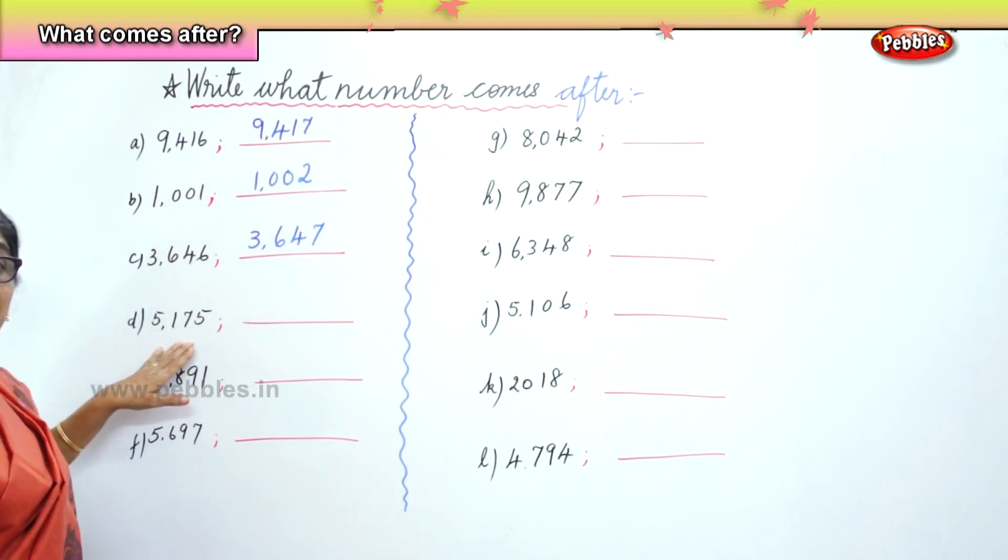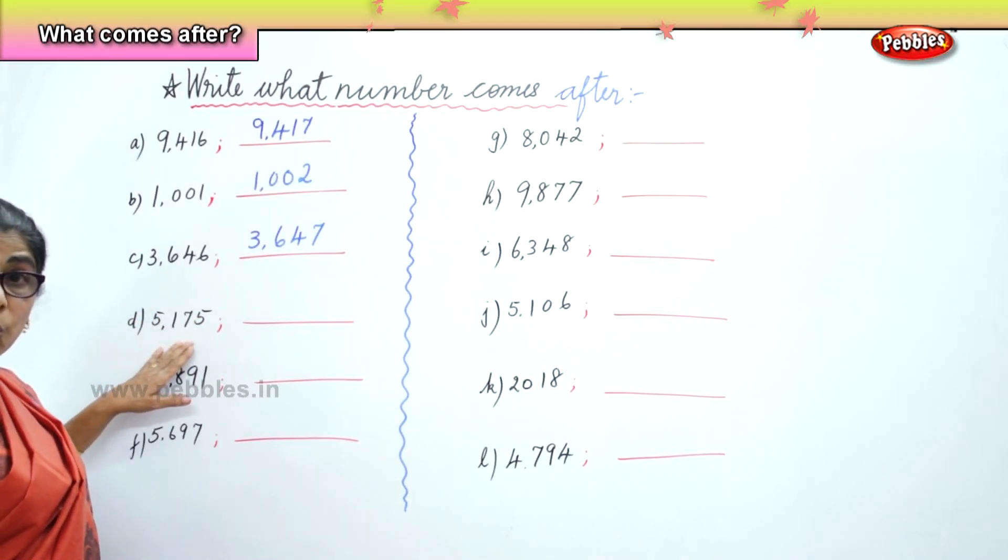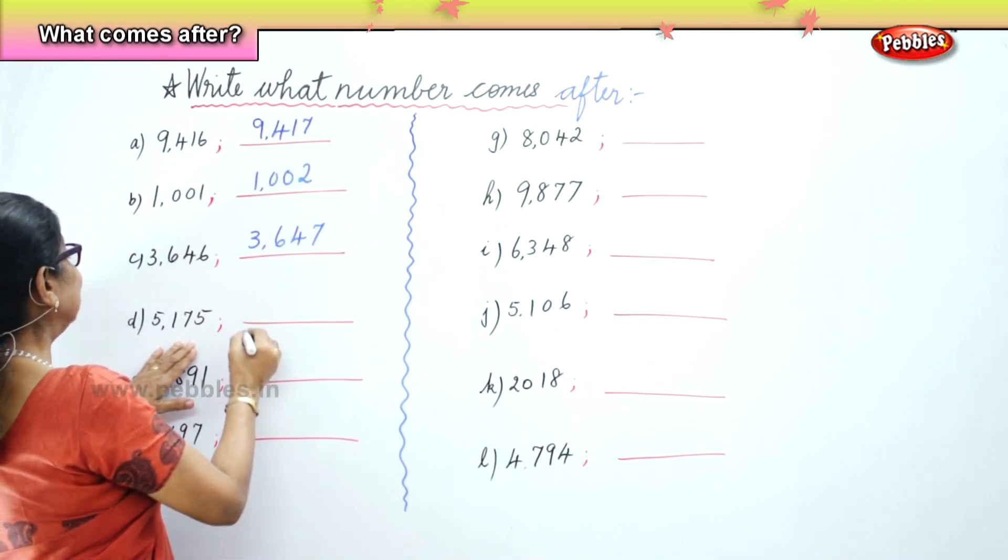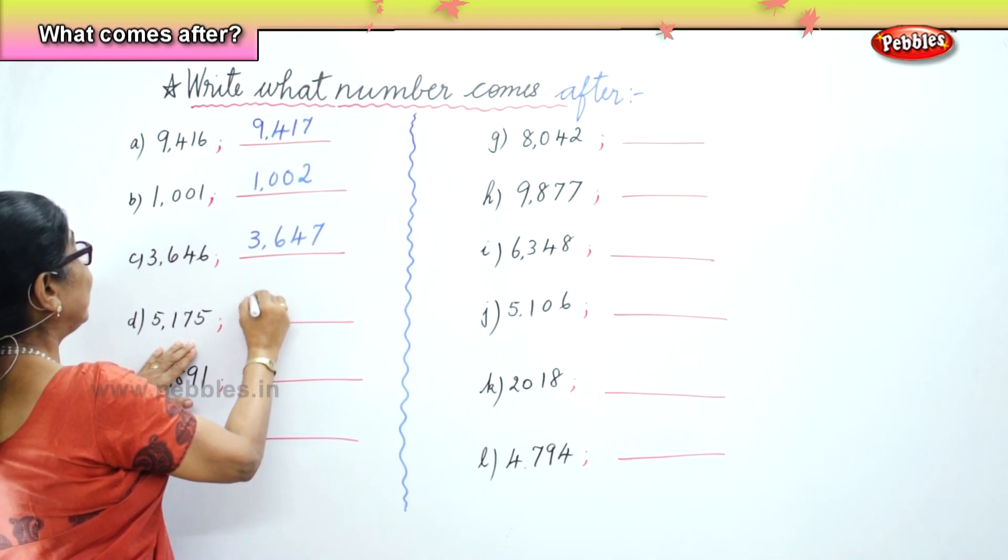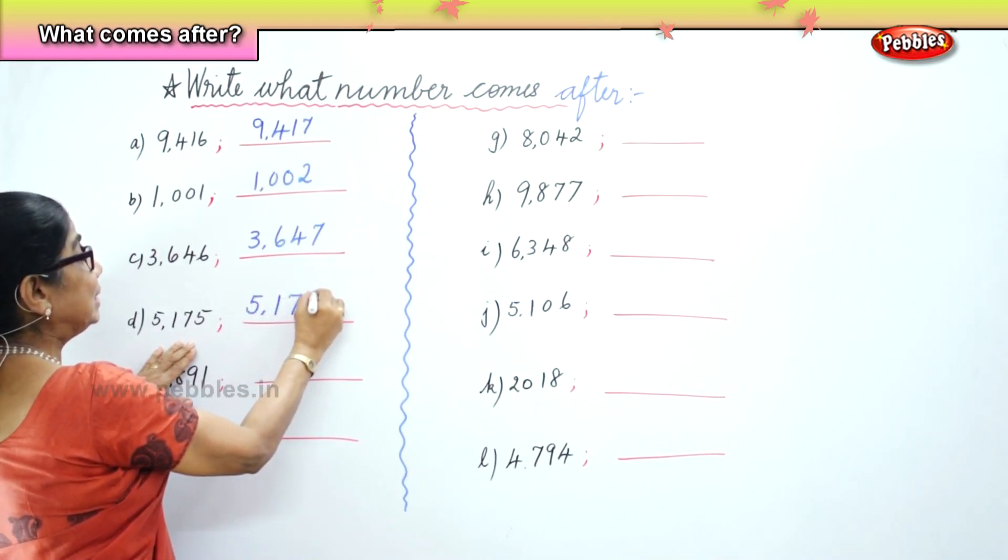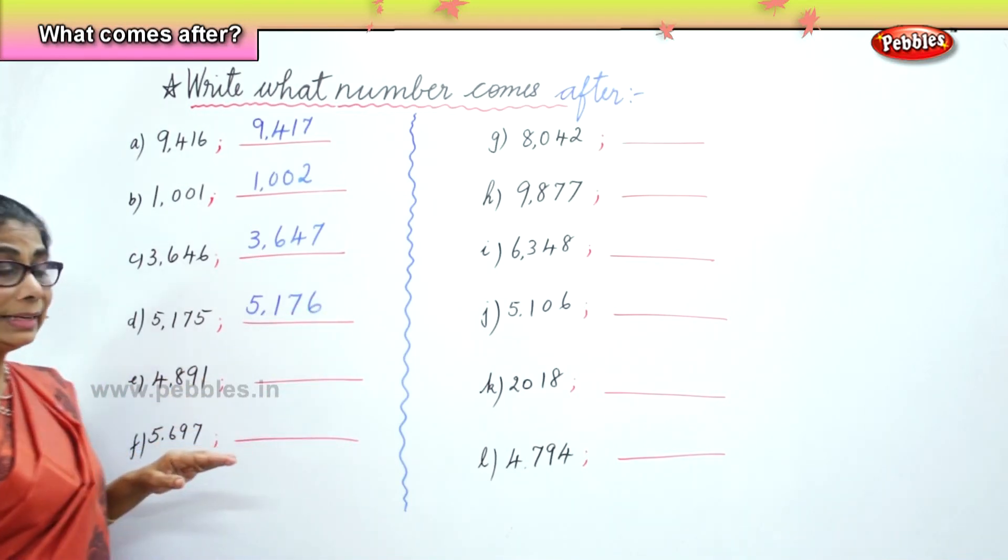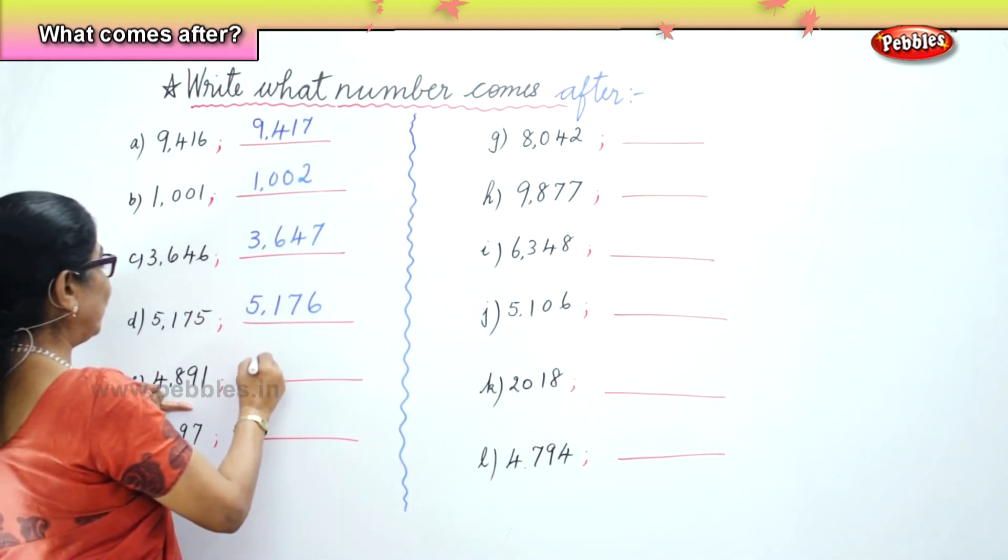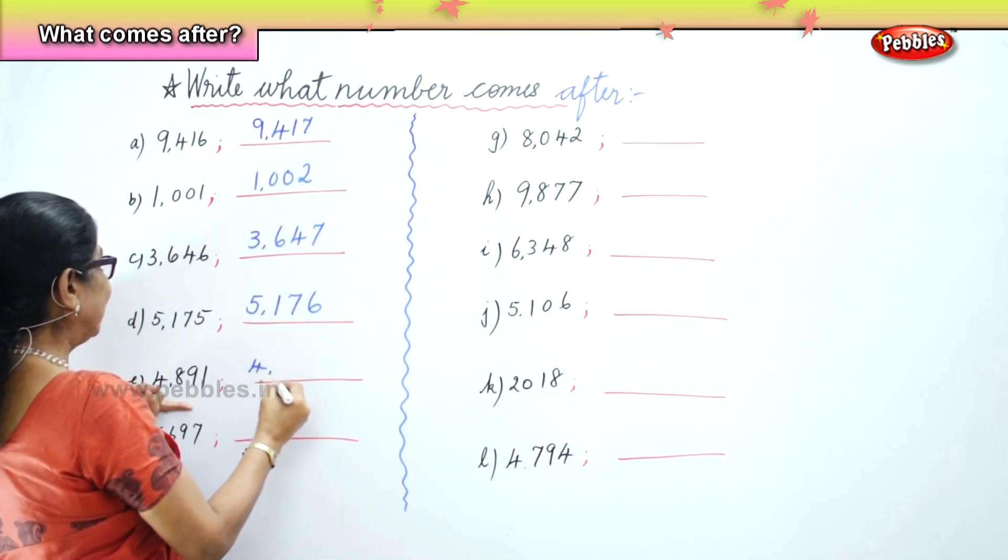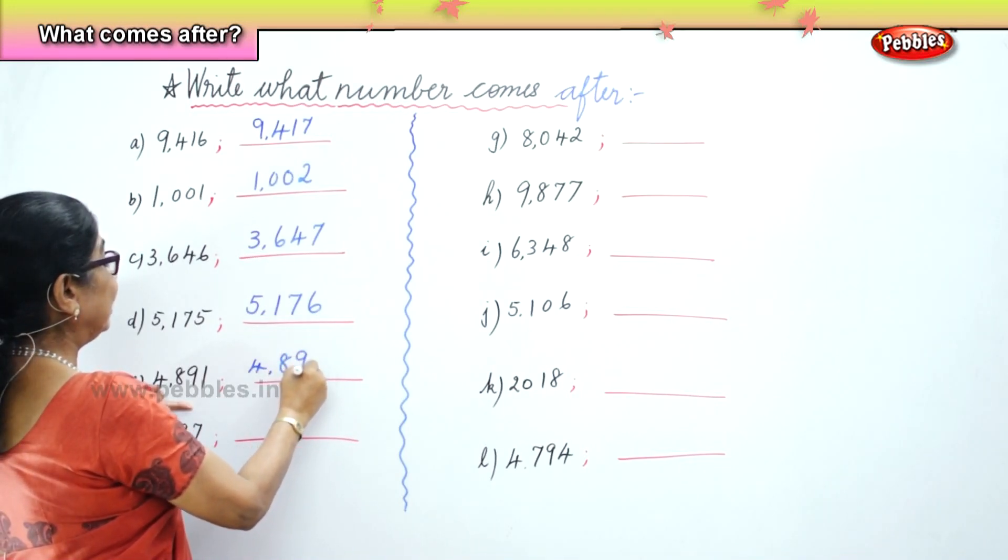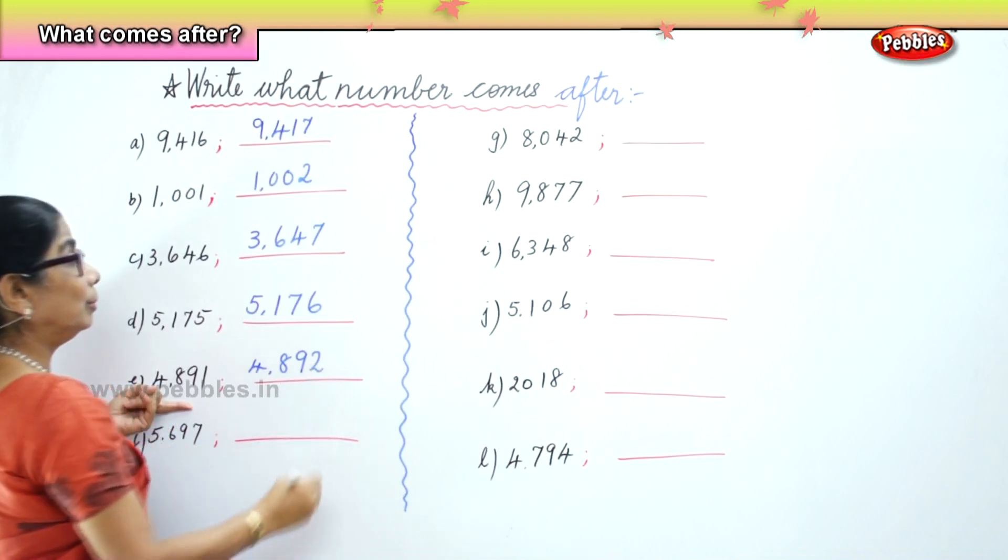Next we have 5,175. The number that comes after is 76. So it will be 5,176. Very good. Next we have 4,891. So the number that comes after, 4,892. Good.